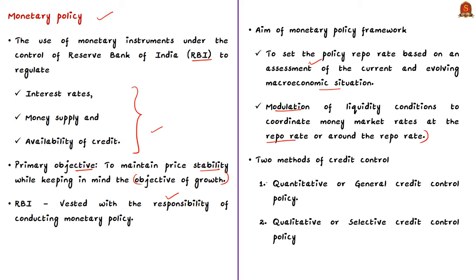When we say money market rates, it refers to interest rates for various money market instruments. The announced repo rate changes transmit through the money market to the entire financial system, and this in turn influences aggregate demand, which is a key determinant of inflation and growth rates.